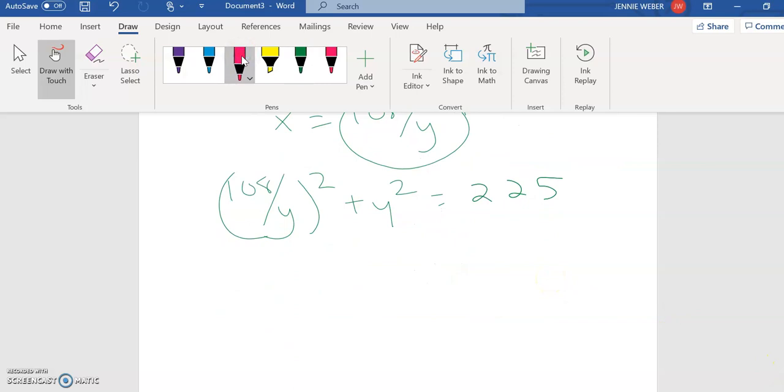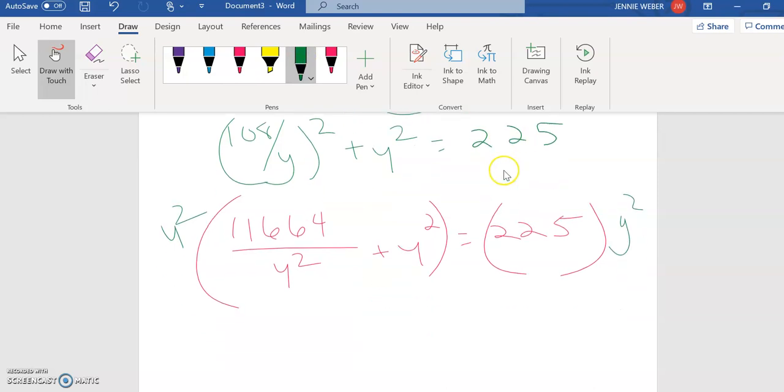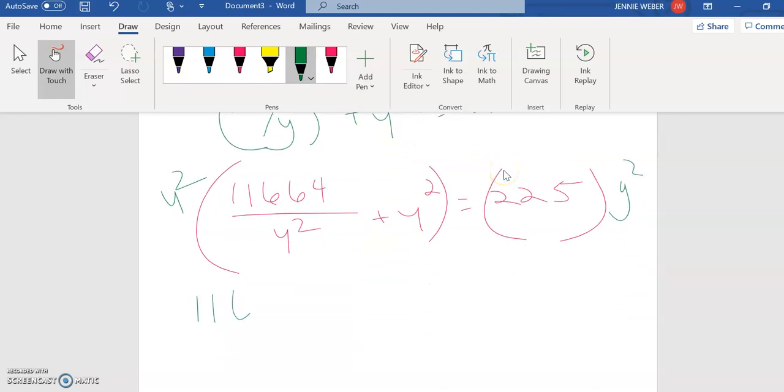So now I want to solve for y. So I'm going to start: 108 squared, I think you've calculated, 11,664 divided by y squared plus y squared equals 225. This is a rational equation. I'm multiplying by the LCD, so in this case, y squared. At least it was a nice clean one, right? 11,664 plus y squared equals 225y squared.